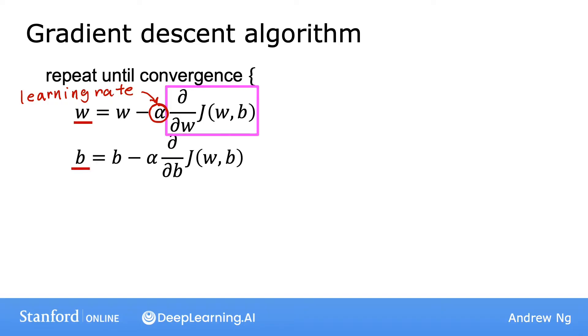This term here, d over dw, is a derivative term. By convention in math, this d is written with this funny font here. In case anyone watching has a PhD in math or is an expert in multivariate calculus, they may be wondering, that's not the derivative, that's the partial derivative. And yes, they'd be right. But for the purposes of implementing a machine learning algorithm, I'm just going to call it the derivative and not worry about these little distinctions.